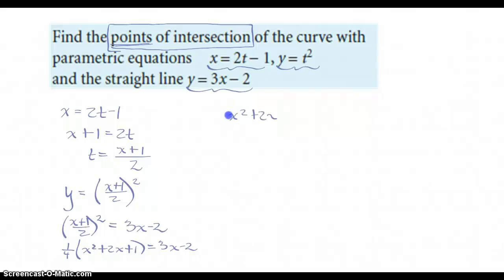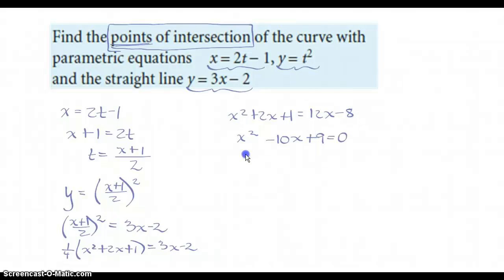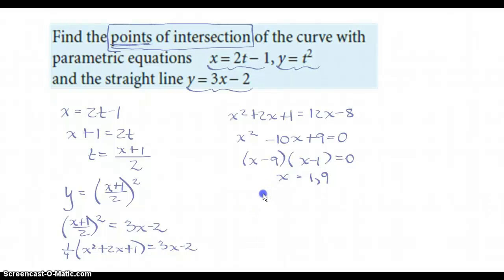Gathering like terms — subtracting 12x from both sides and adding 8 to both sides — this factors to (x − 9)(x − 1) = 0, so there are the x-coordinates. The x-coordinates of the points where those two functions intersect are x = 1 and x = 9.